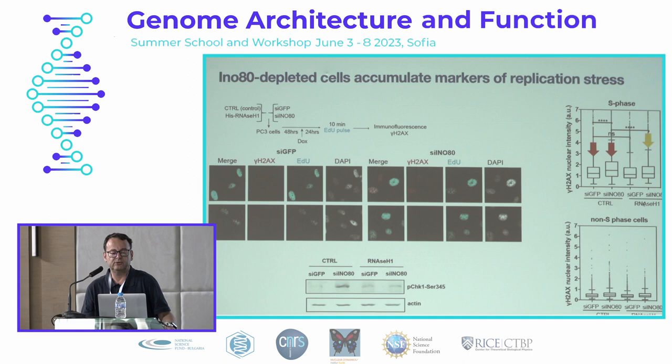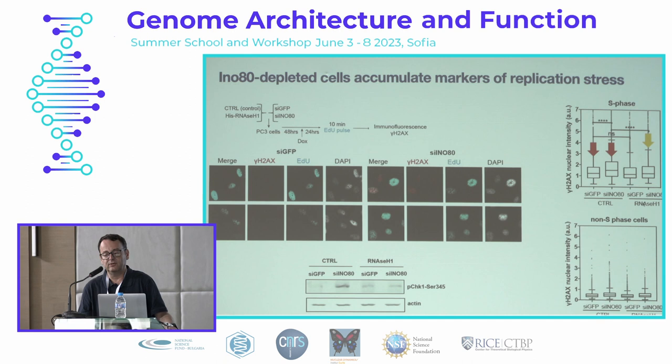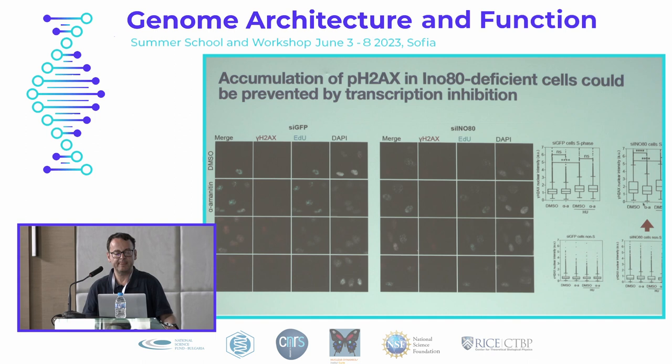Gamma-H2AX is a histone mark associated with DNA damage and replication stress, so it is natural that INO80-deficient cells accumulate gamma-H2AX in an S-phase-specific manner. Overexpression of RNase H1 again rescued the accumulation of this mark. This also happened when we used transcription inhibition — the accumulation of gamma-H2AX was reversed.